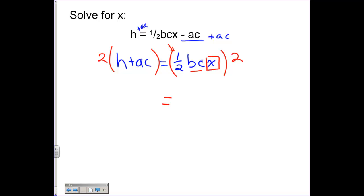And on this right-hand side, the 2s cancel each other out, leaving a bcx. And over here, I'm going to distribute that, which will give me 2h plus 2ac.